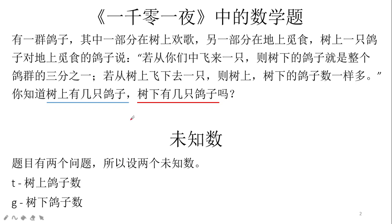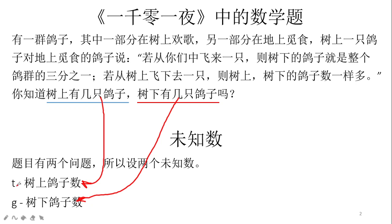针对这两个问题，我们列两个未知数。一个是树上的鸽子数量，我们把它设为T；再一个是地上的鸽子数量，我们设它为G。T的意思就是tree，就是树上；G的意思就是ground，就是地上。T指的是树上的鸽子数，G指的是地面上的鸽子数量，也就是树下的鸽子数量。